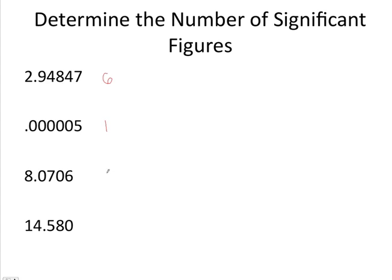Remember that any zeros between non-zero digits are significant, so this value has five significant figures because both of those zeros are going to be significant. And any zeros at the end of a number that has a decimal point are also significant, so this value also has five significant figures.